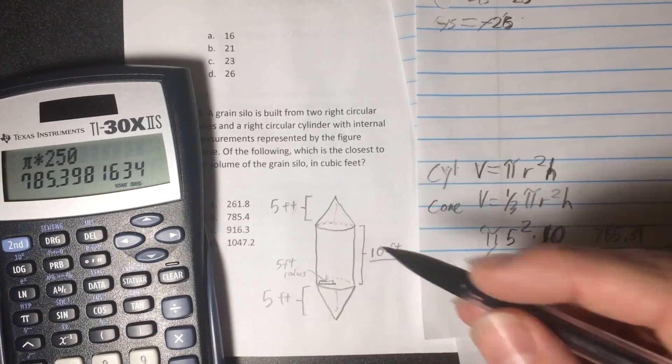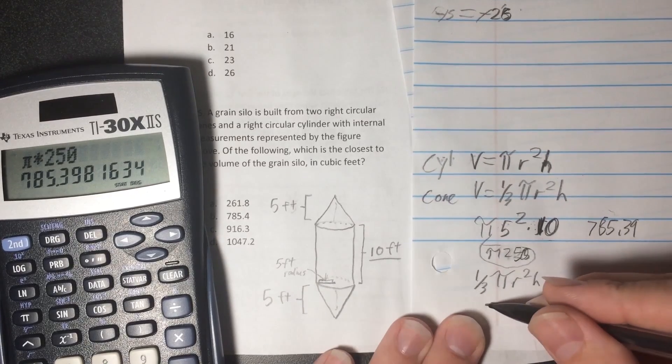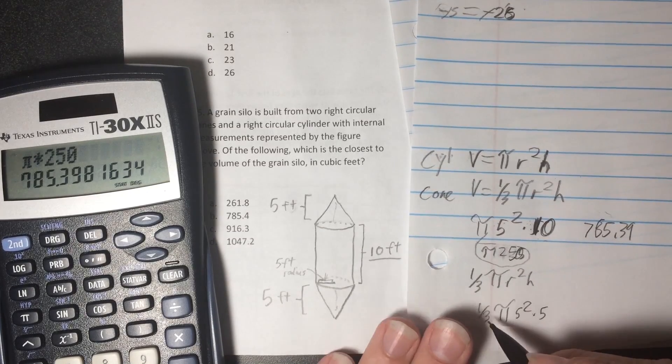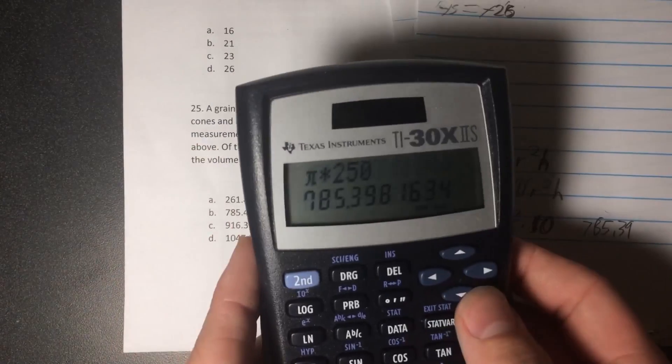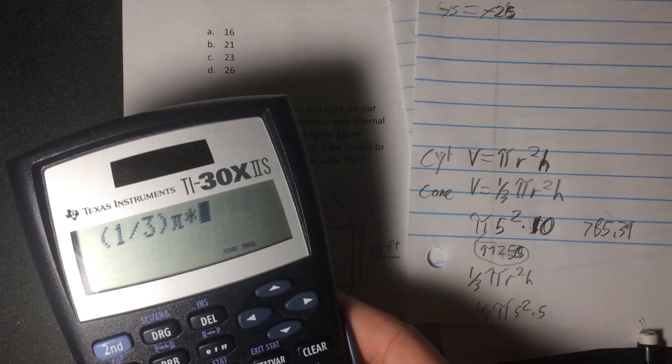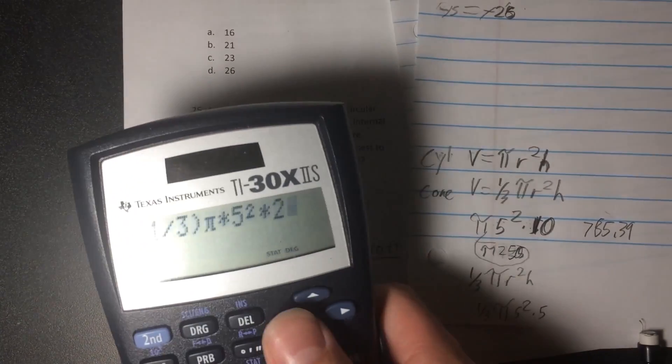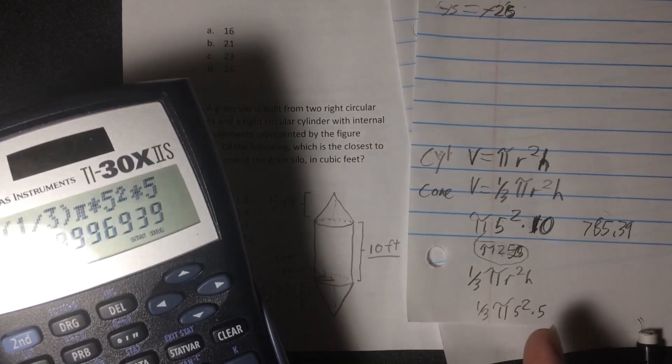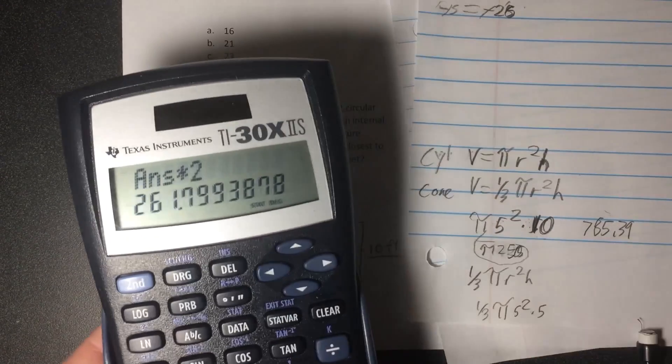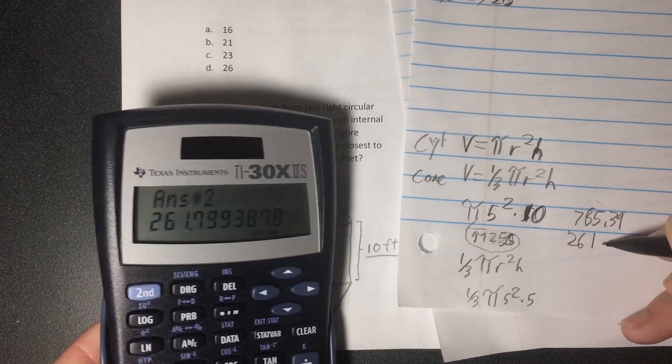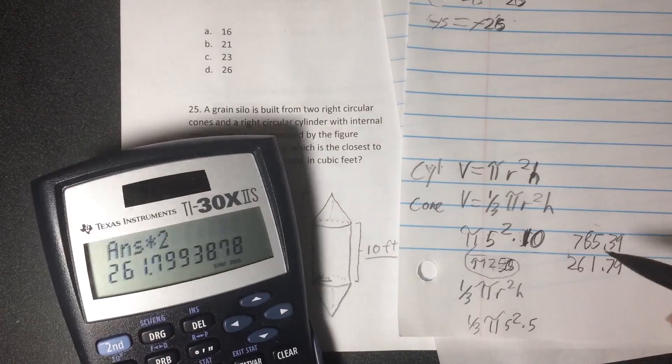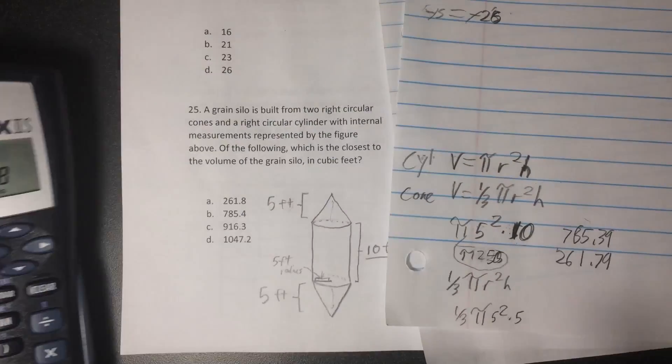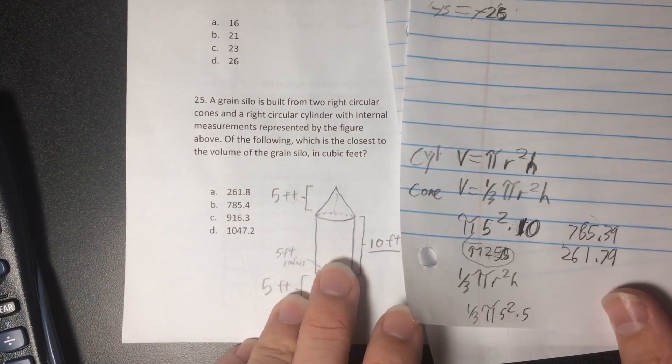And now 1 third pi r squared h. This h is 5, as you can see, because both cones are 5, and both radiuses are 5 for both things. So that'll be 1 third pi times 5 squared times 5. So that'll be pi 125 times 1 third. And then whatever that is, let's find that out. 1 third times pi times 5 squared times 5. And then there's two cones. That was a cone because that 1 third distinguishes it. So now times 2. Now we got both cones. So 785 plus 261.79, just about. You know, I should have rounded. Now we can add to that 785.39. And that gives us 1047. And looky there, we got 1047 as D. So let's go on to the next question.